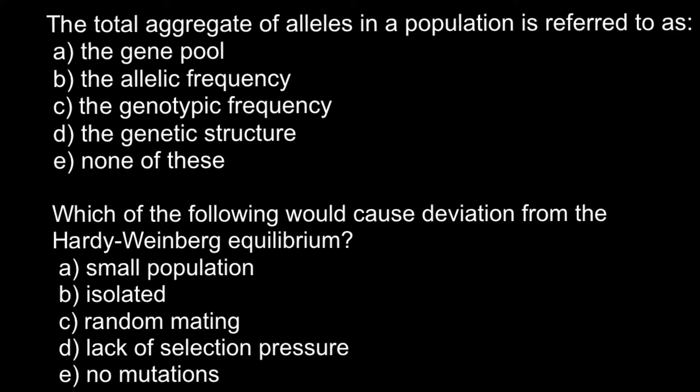I hope that everyone was able to answer this question correctly because I think this is very easy. The answer is A. The total aggregate of alleles in a population is referred to as the gene pool, and all the rest of the answers do not relate to this question directly.